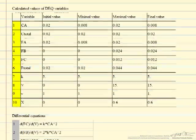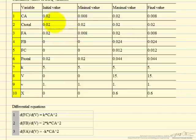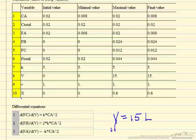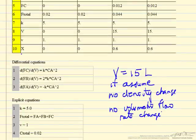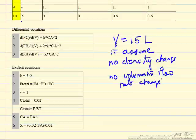Running the Polymath program, the output shows initial, minimum, maximum, and final values. Conversion goes from 0 at the inlet to 0.6 at the outlet. The volumetric flow rate is constant, and the volume is 15 liters. This result assumes no density change — equivalently, no volumetric flow rate change. We know that's not correct, and we want to know how large an error this introduces.